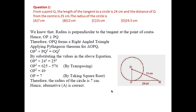We have seen a similar question in the previous class. O is the center of the circle and Q is an external point. From Q, a tangent is drawn to point P, which is 24 centimeters. OQ is 25 centimeters. OP is the radius, and by the first theorem, the radius is perpendicular to the tangent at the point of contact P. Therefore, OPQ is a right triangle.